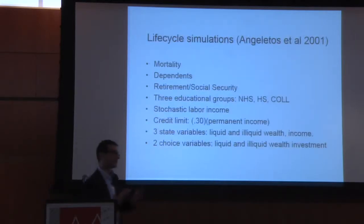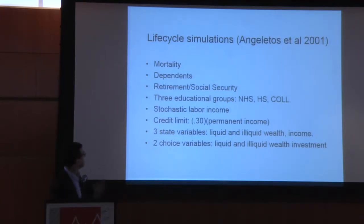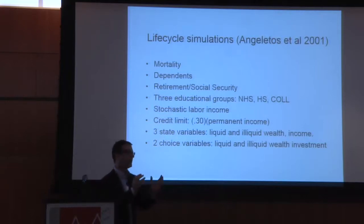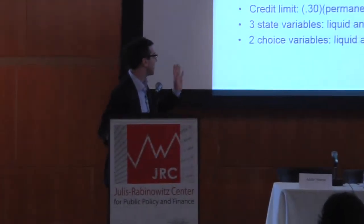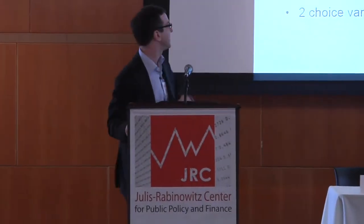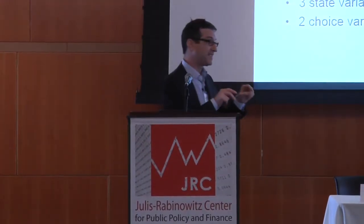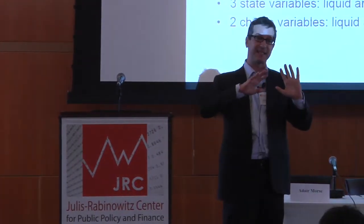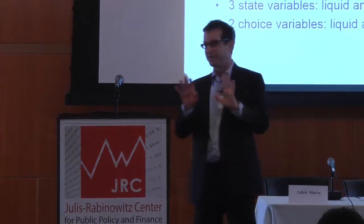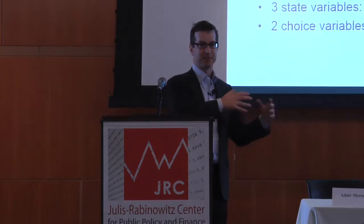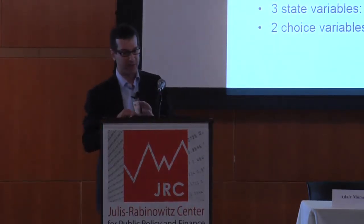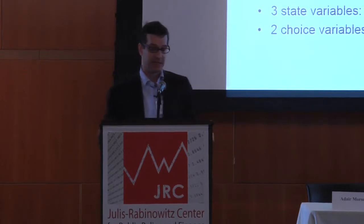Now let's turn to some life cycle simulations — my own work with Mario Sanjolatos and others. We have the standard model with all structural elements: mortality, dependence, retirement, various educational groups, stochastic labor income calibrated from the PSID, and a credit limit. I don't see these models as competitors with the Deaton-Carroll framework; we're really just adding beta-delta to it. We critically rely on credit limits to drive the mechanisms. State variables are liquid and illiquid wealth and income, with two choice variables: liquid and illiquid wealth investment.